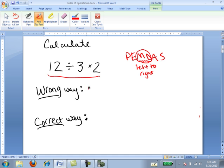So I often see students perform this calculation by performing 3 times 2 first. So they'll rewrite it as 12 divided by 6 and get an answer of 2. But that's wrong.